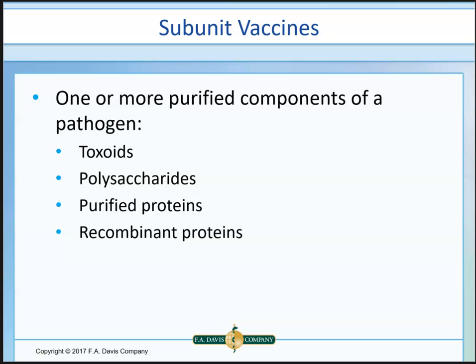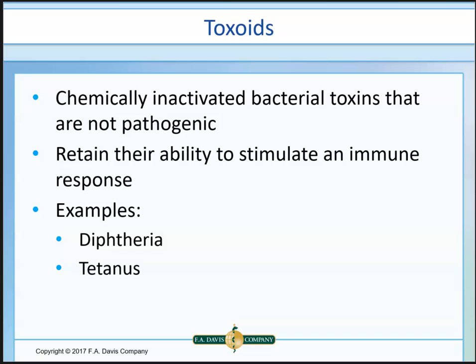Subunit vaccines use purified components of a pathogen rather than the whole organism — just a part of it. Types include toxoids, polysaccharides, purified proteins, or recombinant proteins. Toxoids are substances actually liberated by the virus or bacteria — for example, diphtheria and tetanus. They are chemically inactivated bacterial toxins, so they're not pathogenic, but they still elicit an immune response and work extremely well.